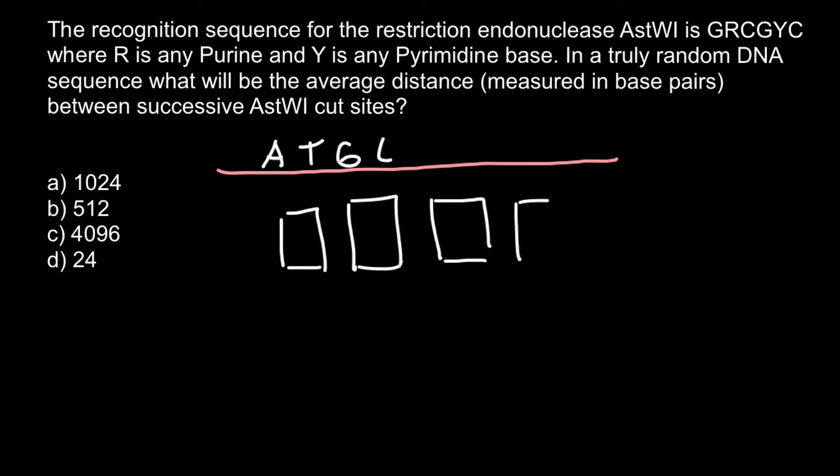So what is the probability that in the first box we would have guanine? The probability would be one out of four, because we can get here either adenine, thymine, guanine, or cytosine. The probability that here in this position we would have guanine would be one out of four, so probability would be 25%.